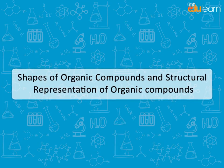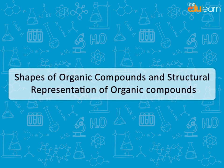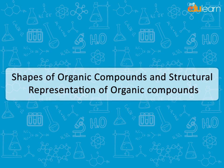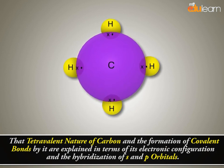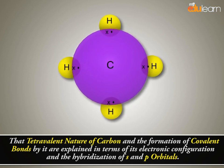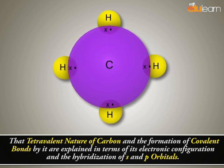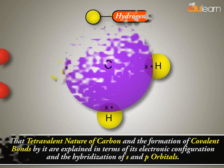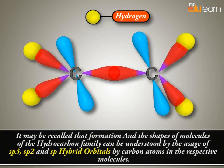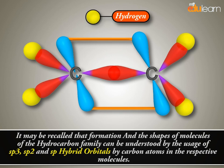Shapes of Organic Compounds and Structural Representation of Organic Compounds. We already know that the tetravalent nature of carbon and the formation of covalent bonds by it are explained in terms of its electronic configuration and the hybridization of s and p orbitals. The shapes of molecules of the hydrocarbon family can be understood by the usage of sp3, sp2, and sp hybrid orbitals by carbon atoms in the respective molecules.